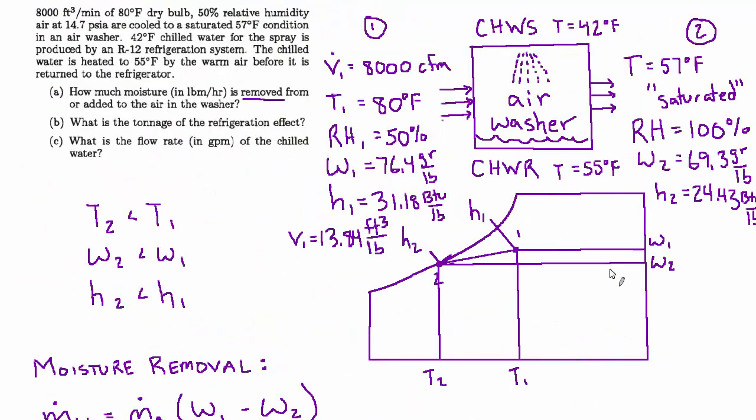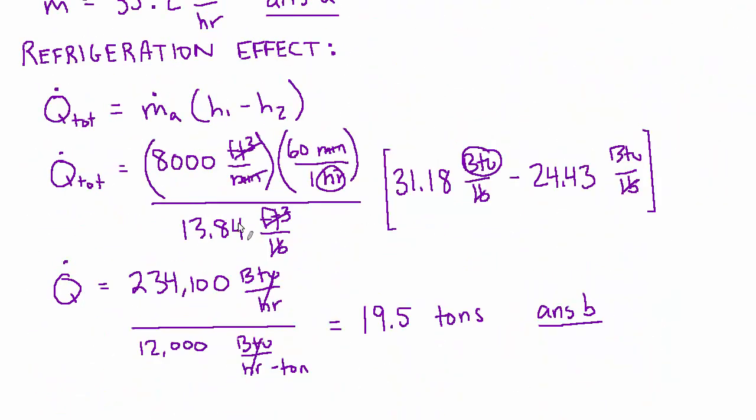And lastly, they wanted us to find the flow rate in GPM of the chilled water. So as this air is getting cooled, the water is heating up. It's being supplied at 42 and returned at 55. So there's this delta T of about 13 degrees. And we know how much energy has to be absorbed by the water. It's the same amount of energy that was removed from the air side has to be transferred into the water side. So what we just found that refrigeration effect in BTUs per hour or tons, however you prefer to think about it, that energy has to balance energy in equals energy out.